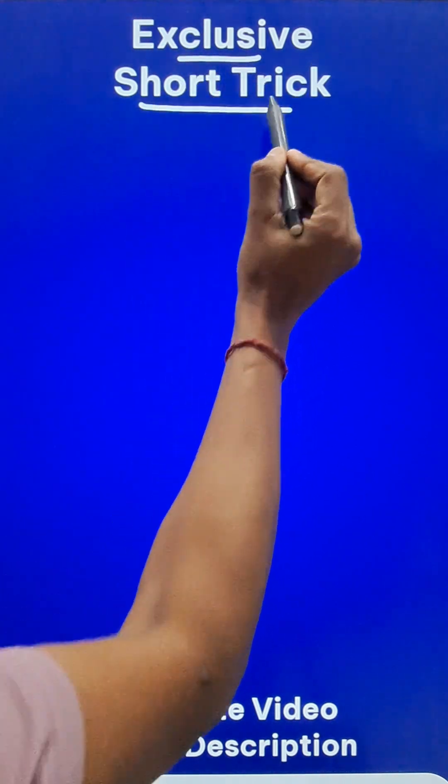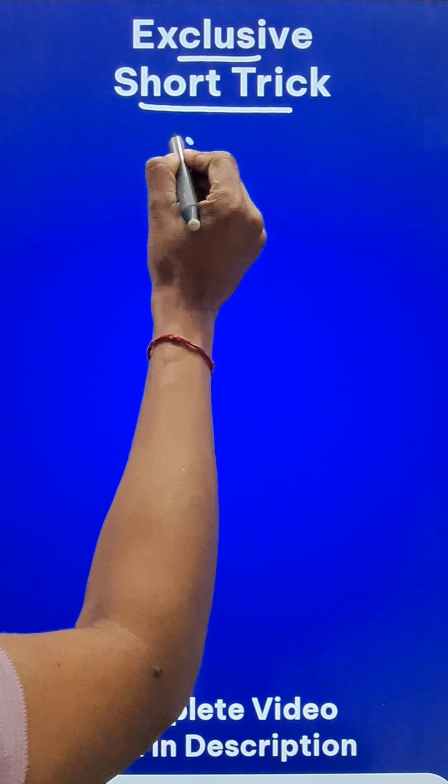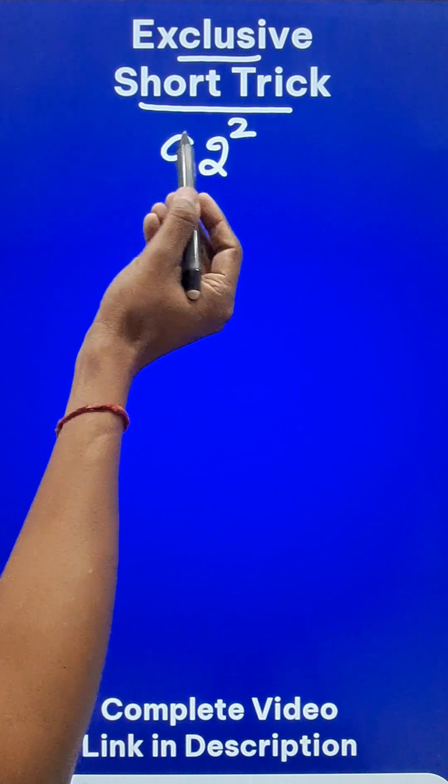Here is an exclusive short trick for squaring numbers which are very close to base quantities. Like if you want to square 92, it's very close to 100.